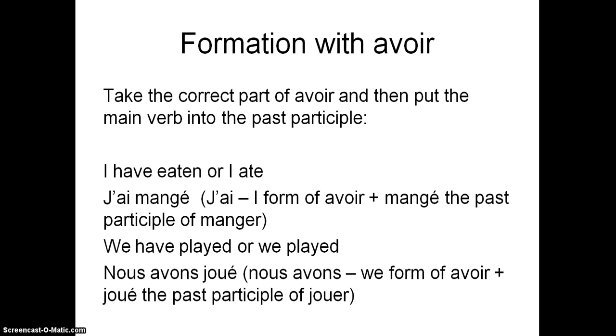So I have eaten or ate would become j'ai mangé. So we've got j'ai, the pronoun je would become j'ai. It has an apostrophe here because of the two vowels together. So it's the I form with avoir, and then we use the past participle of manger, which becomes mangé. Or we have played or we played. And this one takes avoir as well, obviously. So we've got nous avons joué. Nous avons is the we form of avoir, and then joué is the past participle of jouer.